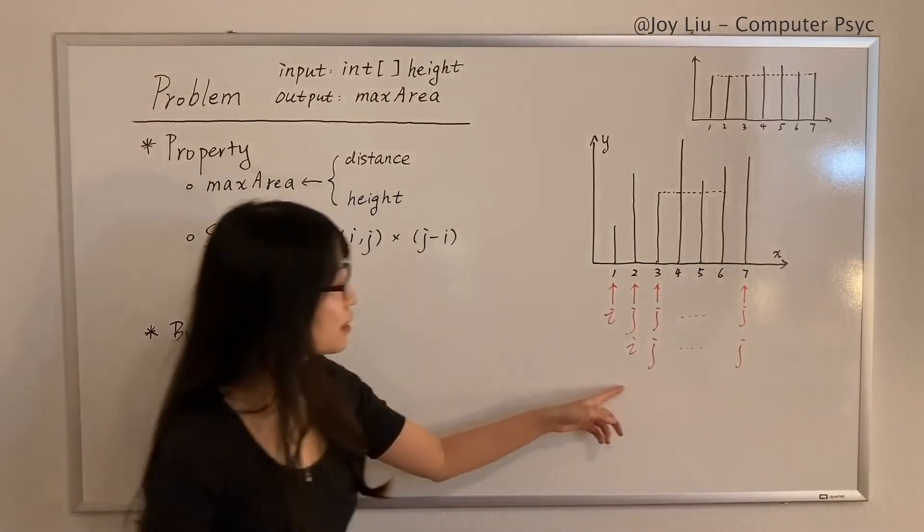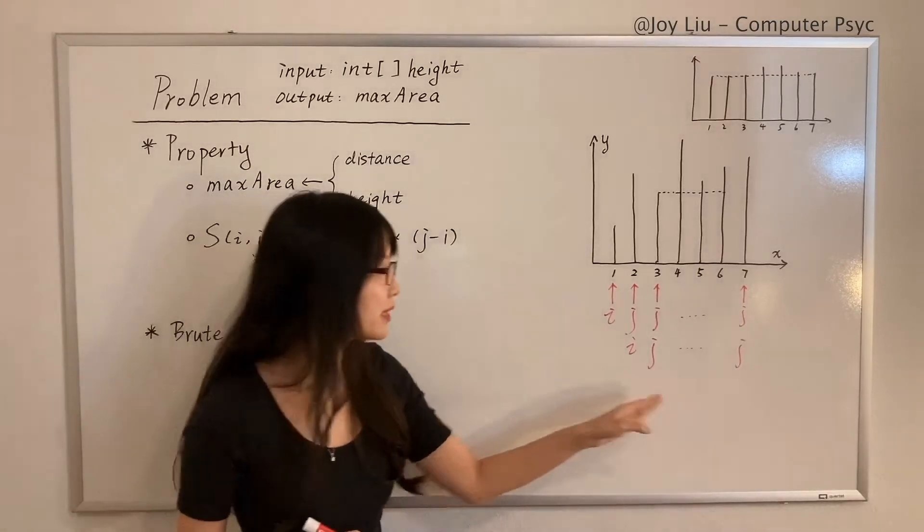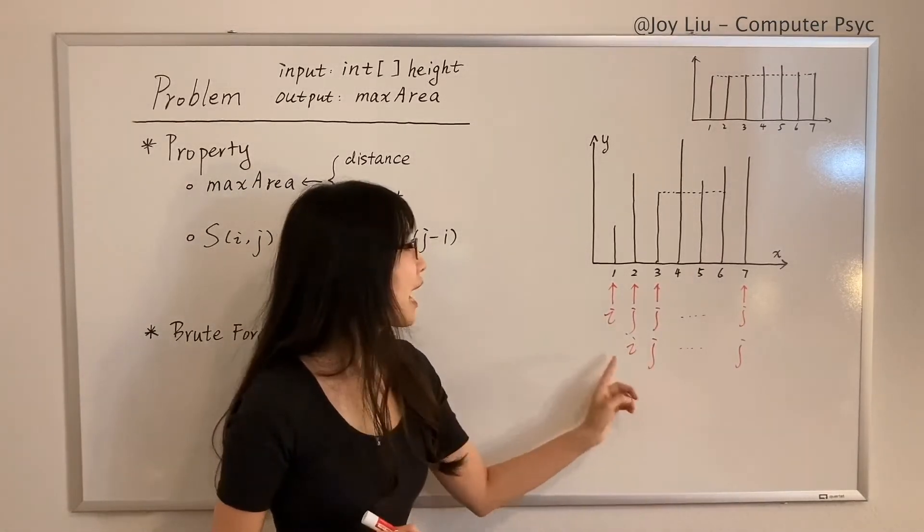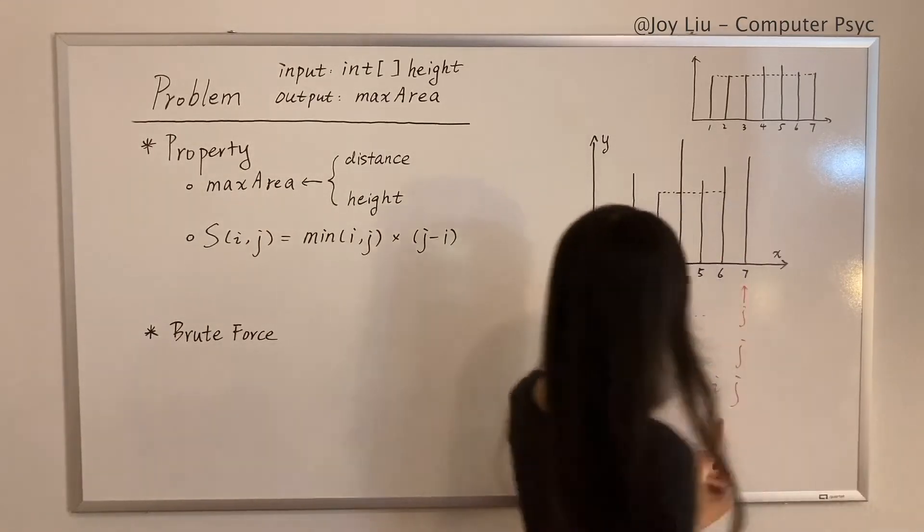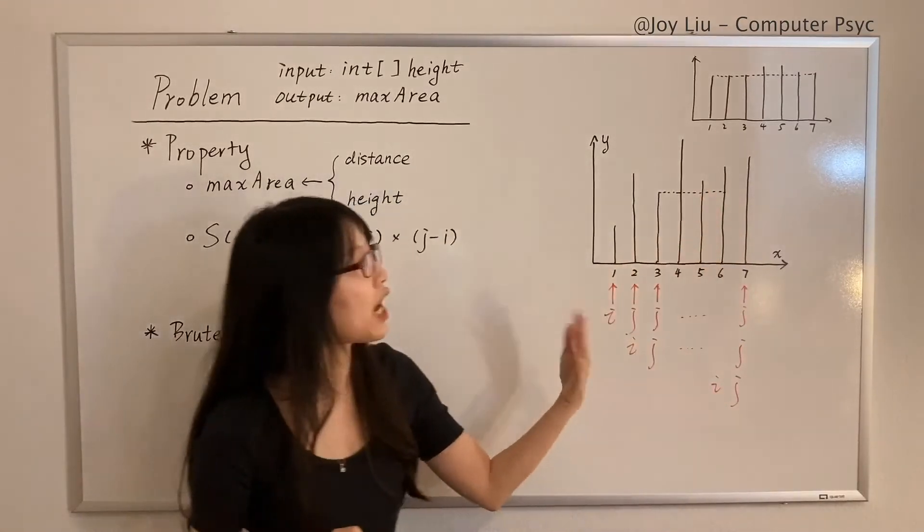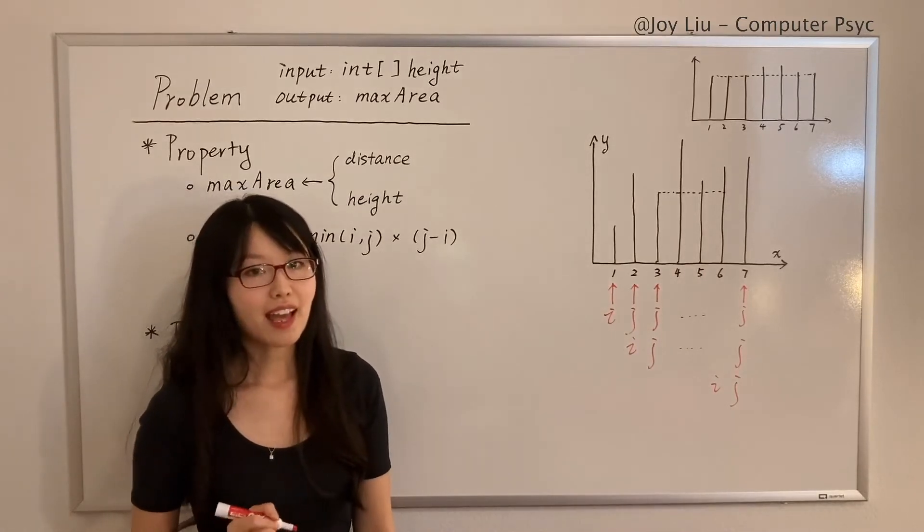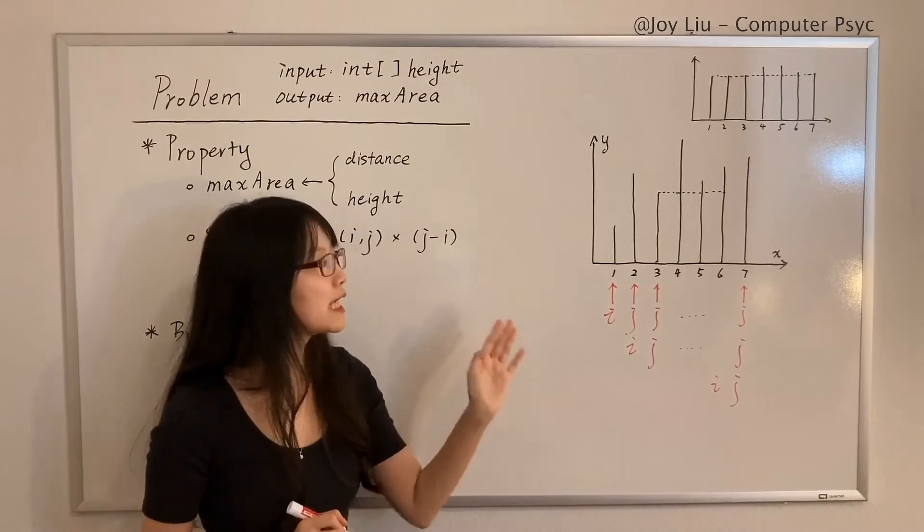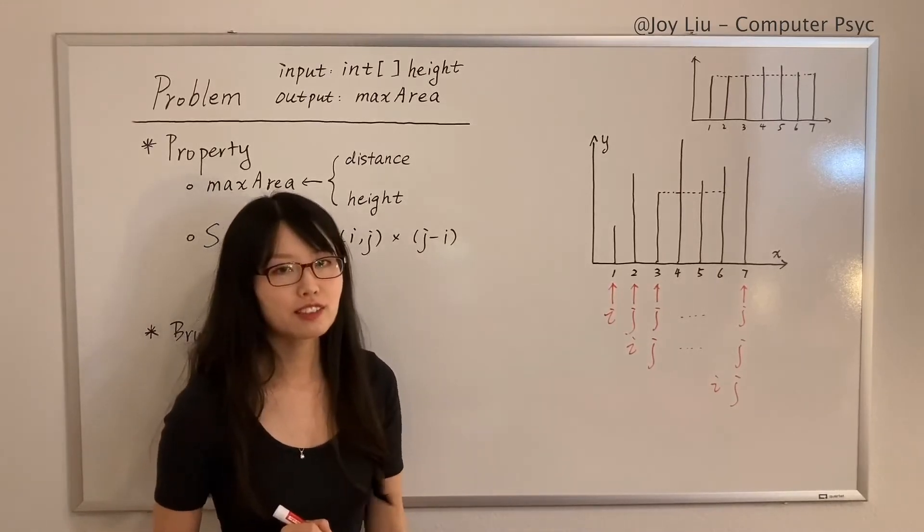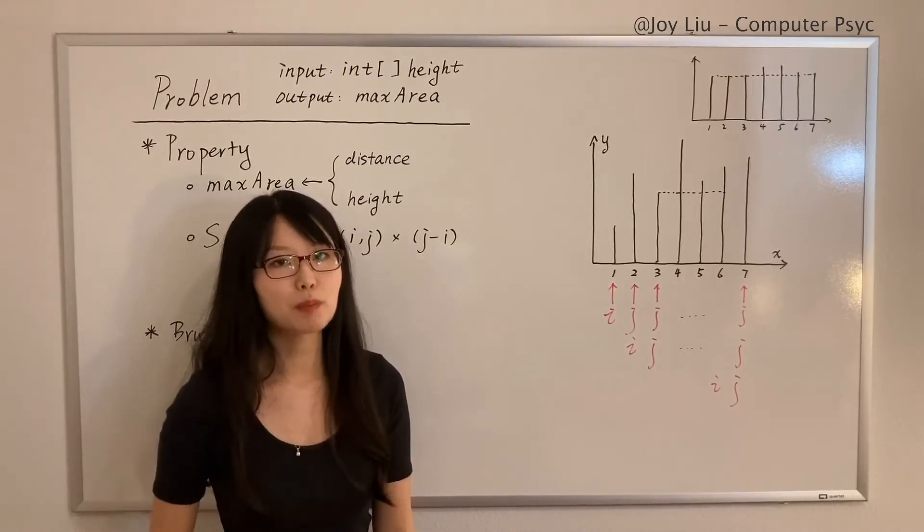And then j moves to four, three, six, two, seven—the last one. Okay, so this is the second round, and we repeat it until i reaches six and j reaches seven. We calculate, and after we find all of these areas of the containers, we pick the max among all areas.